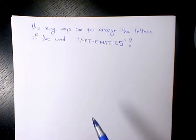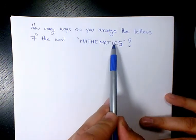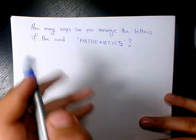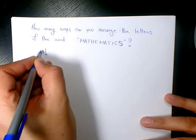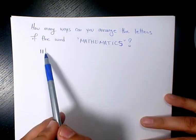So we start by counting the letters: one, two, three, four, five, six, seven, eight, nine, ten, eleven. So we have eleven letters. If we don't have any repetition, the answer is going to be eleven factorial.